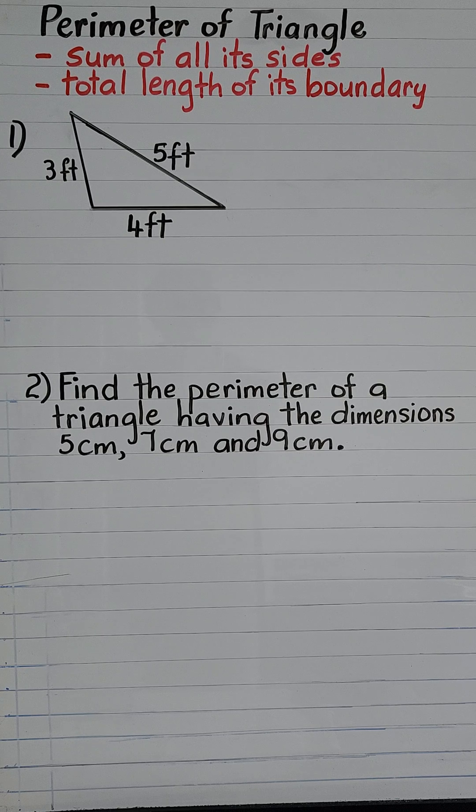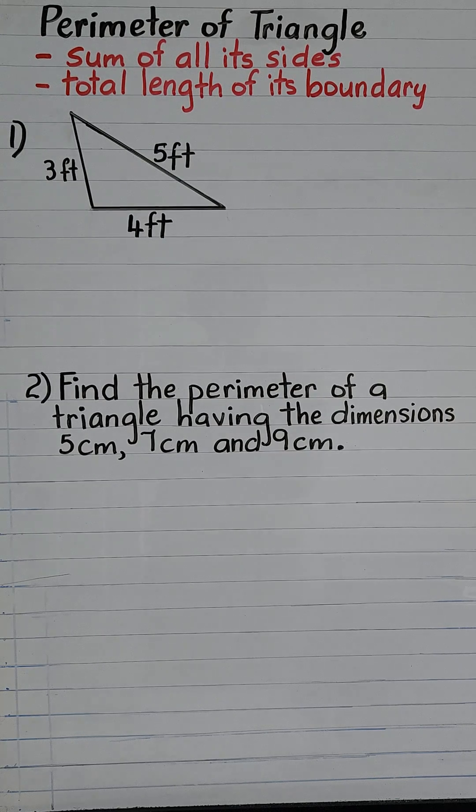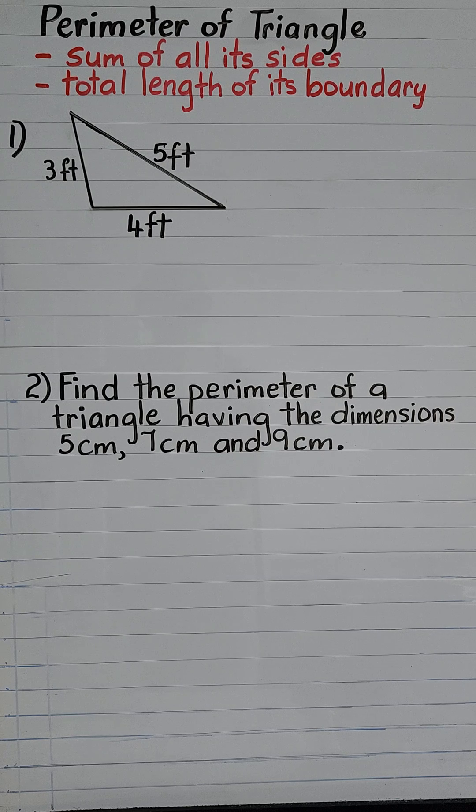Welcome to Perimeter of Triangle 5th Grade Maths. A triangle has three sides. The perimeter of the triangle is equal to the sum of all its sides or the total length of its boundary.